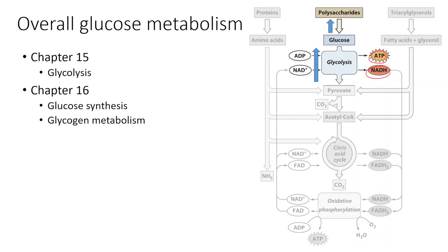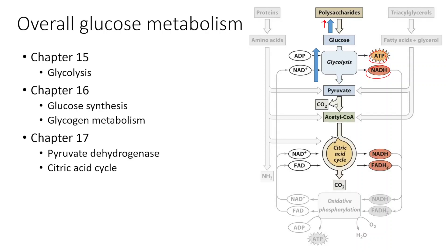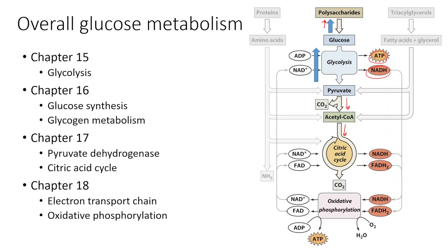In Chapter 16, we'll move on to essentially the reverse of glycolysis — glucose synthesis from pyruvate back up to glucose — and we'll also talk about glycogen metabolism, both the buildup and breakdown of glycogen, the polysaccharide form of glucose. In Chapter 17, we'll discuss the conversion of pyruvate to acetyl-CoA using the pyruvate dehydrogenase complex, then move into the citric acid cycle, where we'll see more reduction of NADH and FADH2. Finally, in Chapter 18, we'll cover making ATP from those reduced electron carriers through the electron transport chain and oxidative phosphorylation.